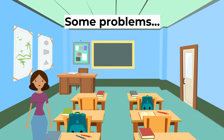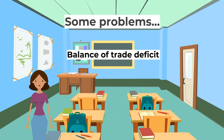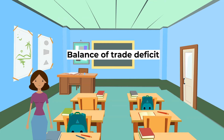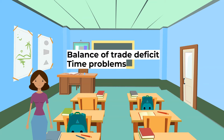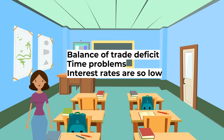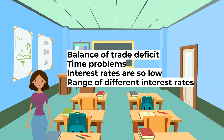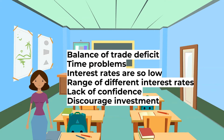There are some problems with this method of demand management. Firstly, the exchange rate may be affected so much that exports fall significantly and imports rise significantly, causing a balance of trade deficit. Moreover, changes in interest rates take up to two years to have their full effect, and small changes may not affect people's decisions. Sometimes interest rates are so low that they cannot be decreased any further to stimulate demand, which is a particular issue for many countries today. There are also a range of different interest rates not all affected by the Bank of England base rate. A lack of confidence may mean that no matter how low interest rates are, consumers and businesses do not want to borrow or banks do not want to lend. High interest rates over a long period of time will discourage investment and decrease long-run aggregate supply.